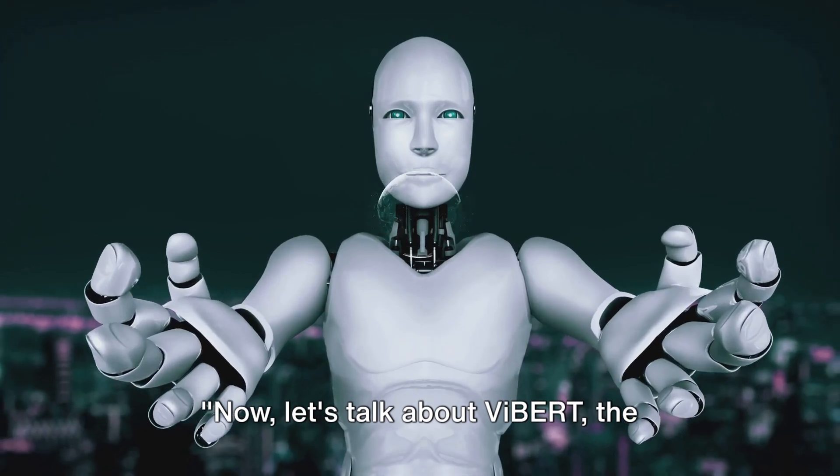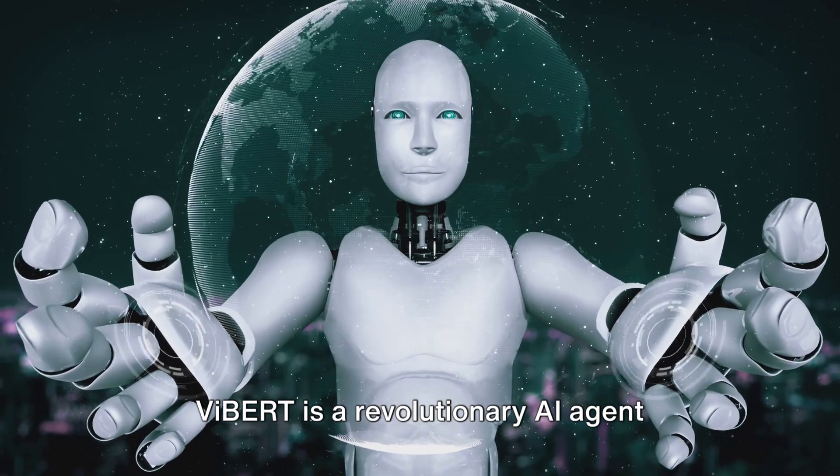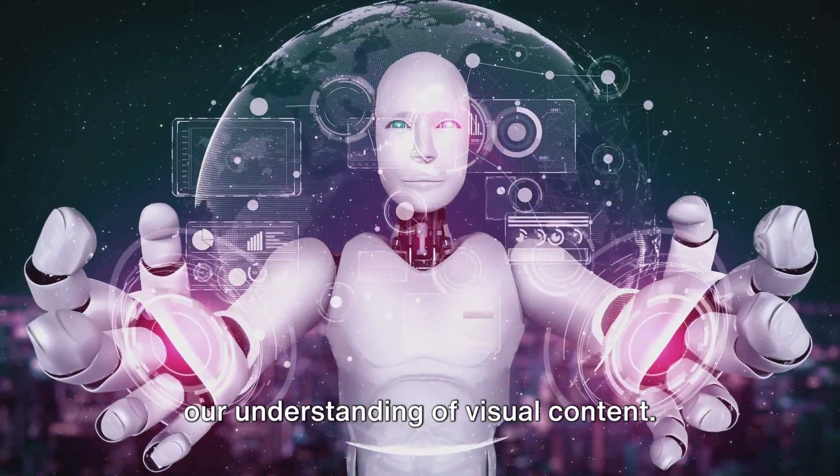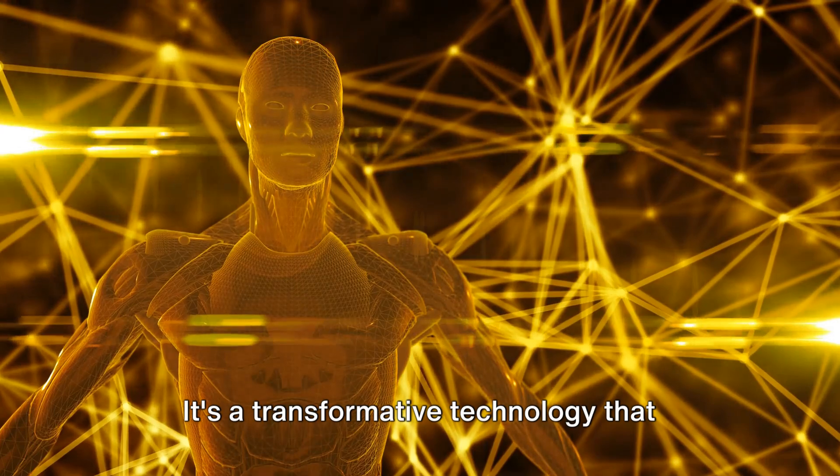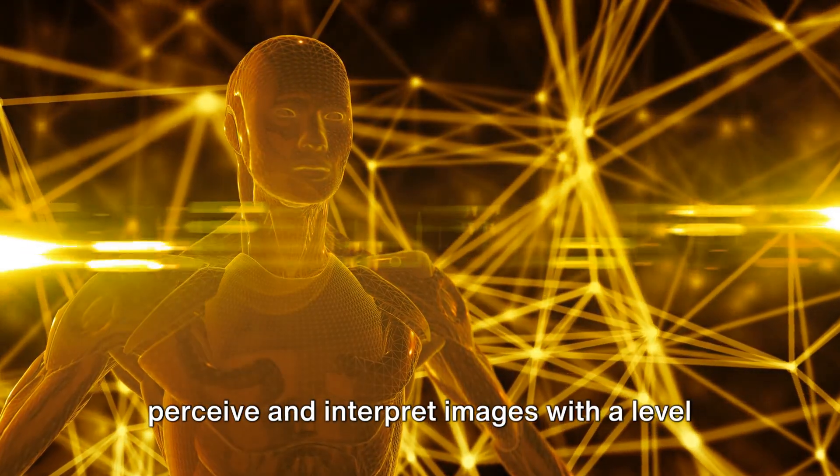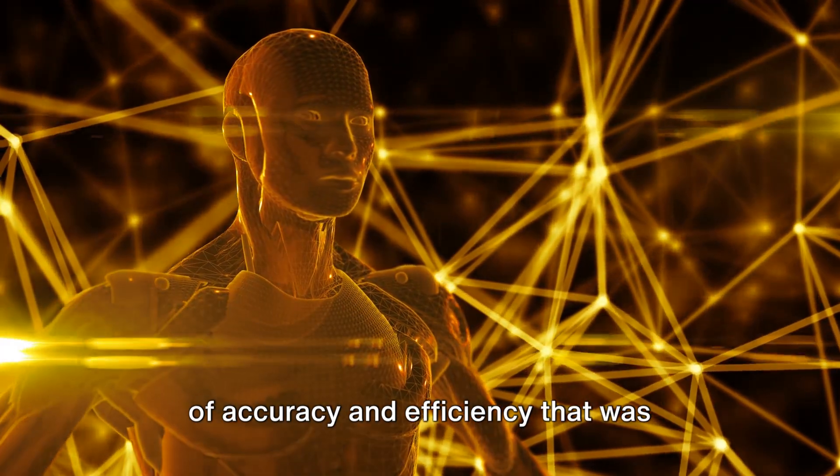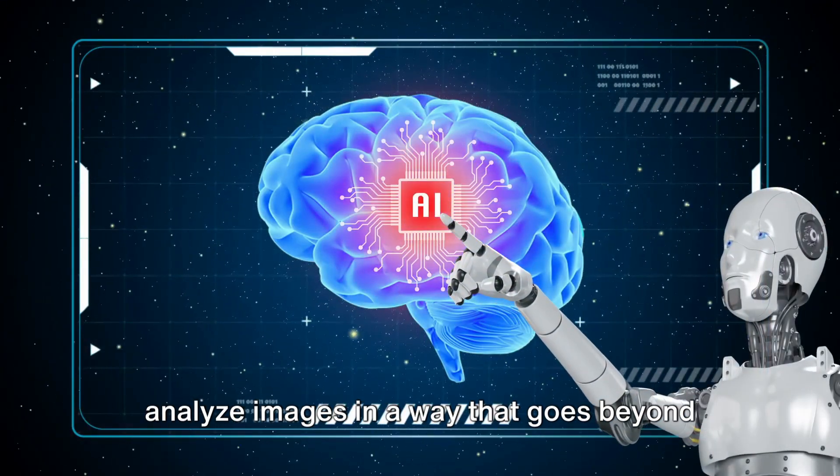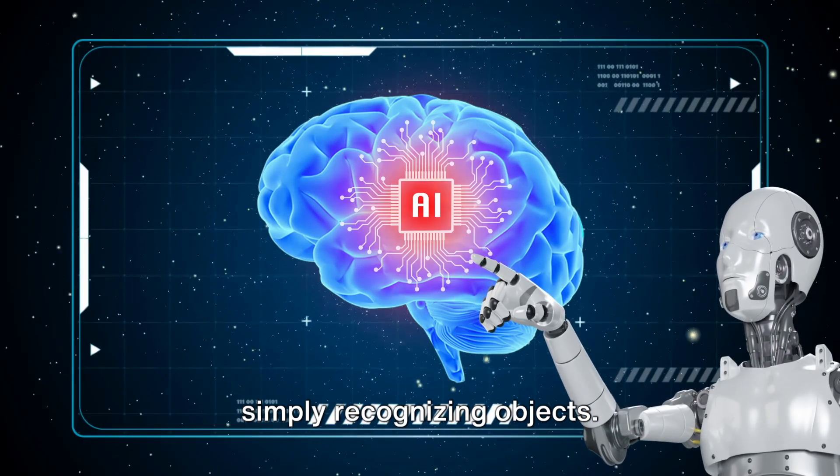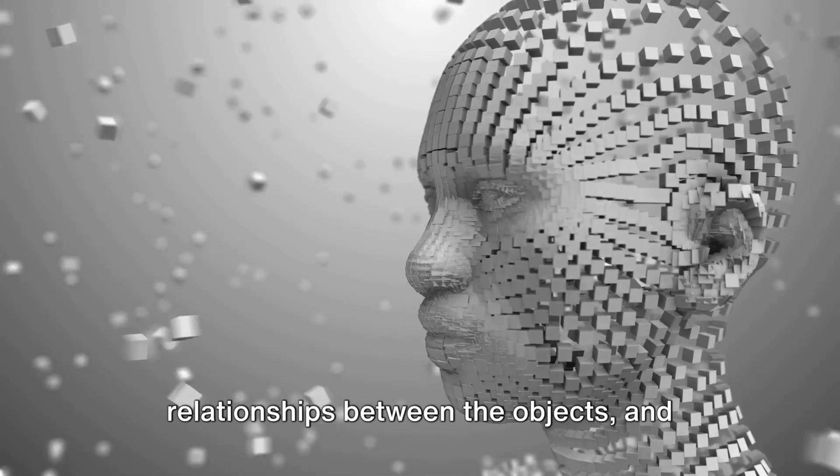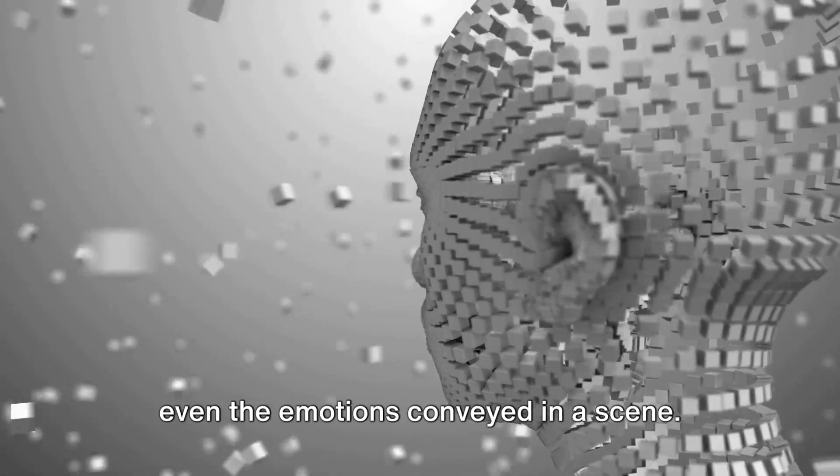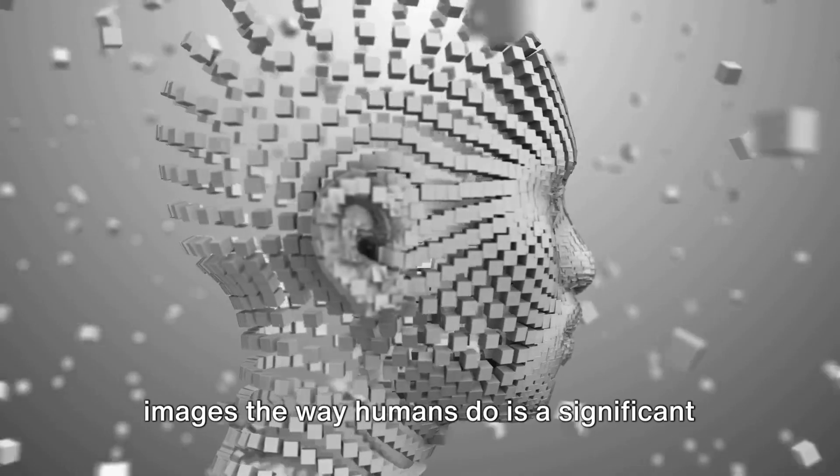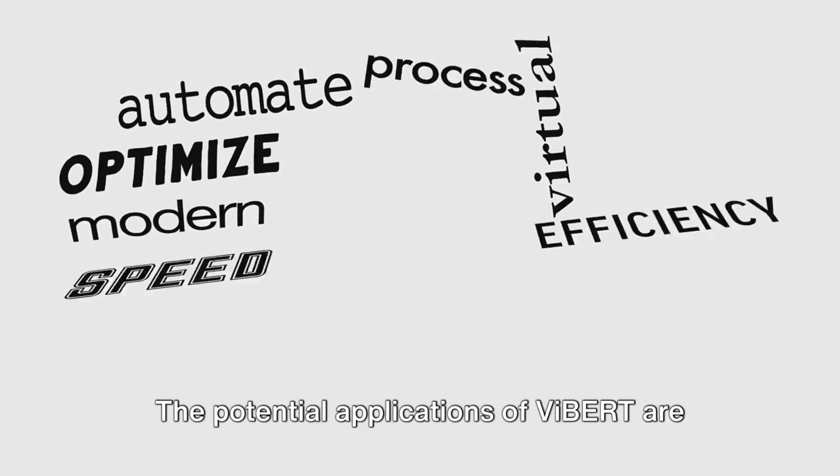Now, let's talk about Vibert, the vision-based transformer. Vibert is a revolutionary AI agent developed by Google, aimed at advancing our understanding of visual content. It's a transformative technology that leverages transformer-based models to perceive and interpret images with a level of accuracy and efficiency that was previously unheard of. What sets Vibert apart is its ability to analyze images in a way that goes beyond simply recognizing objects. It can understand the context, the relationships between the objects, and even the emotions conveyed in a scene. This ability to see and understand images the way humans do is a significant leap forward in AI technology.